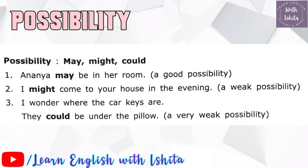The uses of may, might, and could: when talking about possibility, we use these modals. 'Ananna may be in her room' — a strong possibility. 'I might come to your house in the evening' — a weak possibility, because I'm not sure. 'The cookies could be under the pillow' — a very weak possibility, because I don't know where the cookies are.